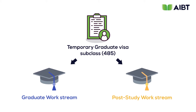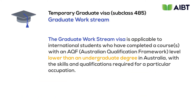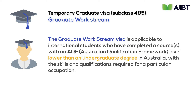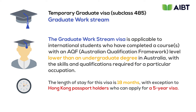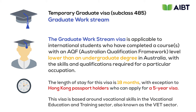Let's get more detail about these two different visas. The Graduate Work Stream visa is applicable to international students who have completed a course with an AQF level lower than an undergraduate degree in Australia. The length for this visa is 18 months, unless you are from Hong Kong, in which case you're eligible for a visa of up to five years. This visa is based around vocational skills and the vocational education and training sector, otherwise known as VET.